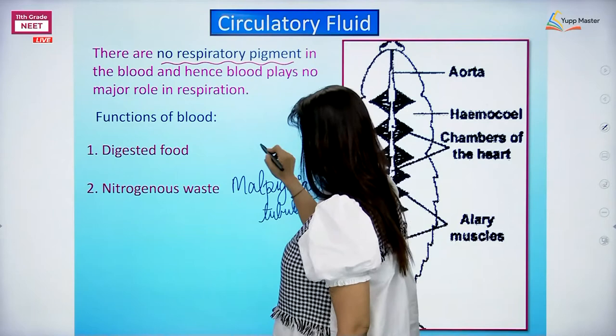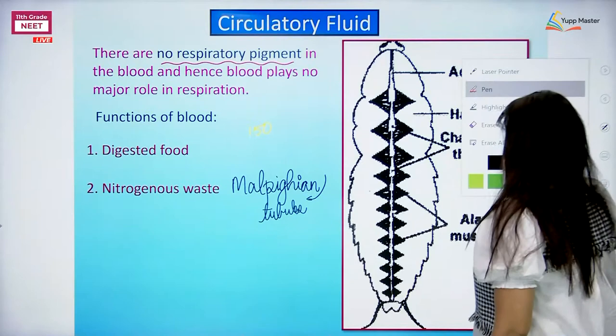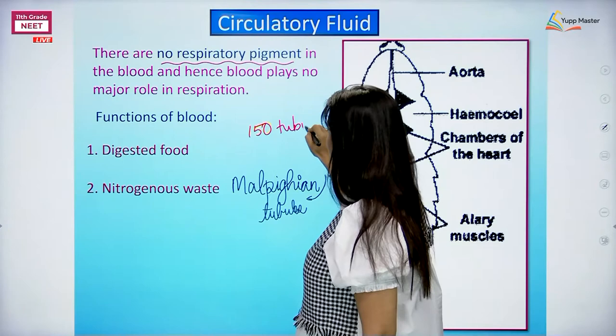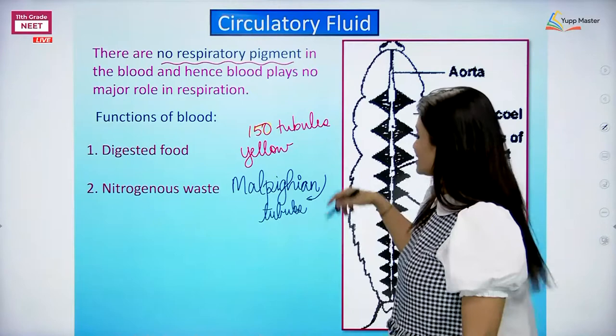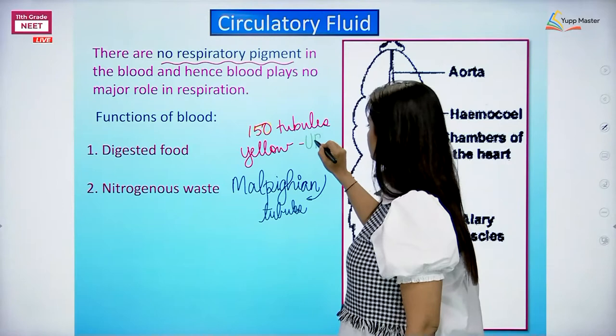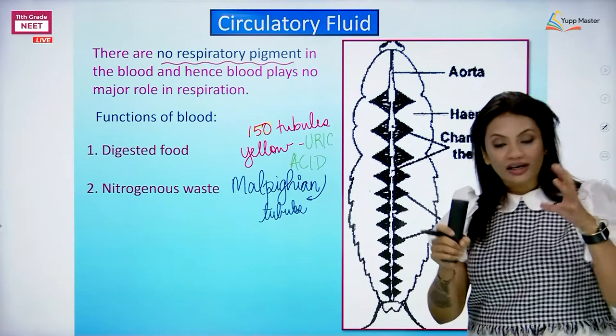There were 150 malpighian tubules, yellow in color, and they are going to do the work of taking out the excretory products - which is uric acid. So it is the function of the blood to carry all the nitrogenous waste from all the different parts of the body all the way to the malpighian tubules.